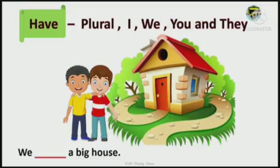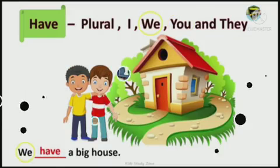We will look. Next example. We dash a big house. Is we is there in the rule box? Check karo beta. We hai rule box mein? Yes. So, what we are using with we? Have. H-A-V-E have. Thank you.